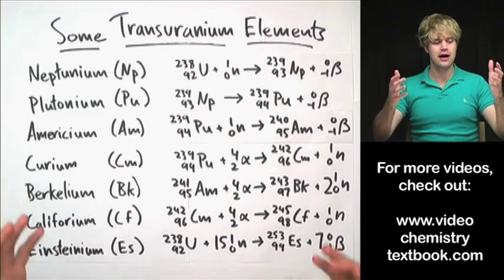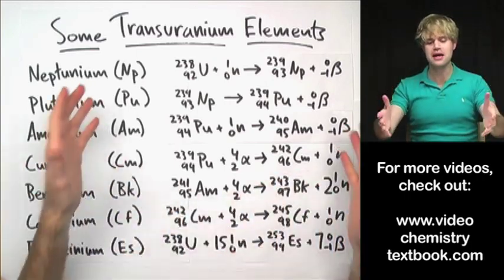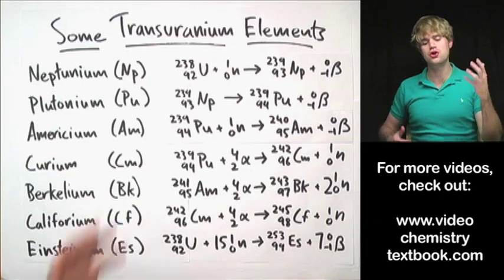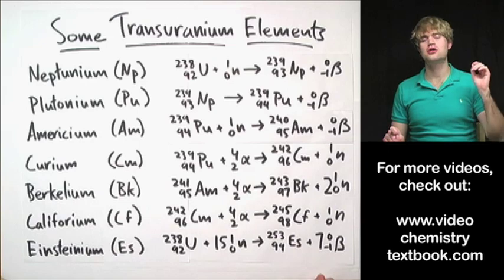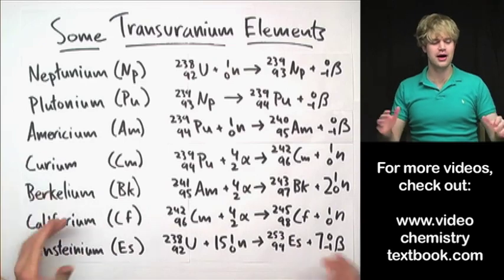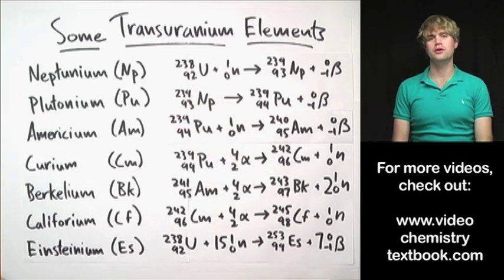To take elements and make new atoms that we don't naturally find in nature. These are the trans-uranium elements which have atomic numbers over 92 and tend to have pretty cool names.